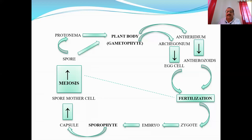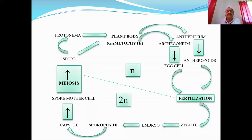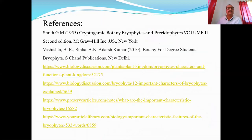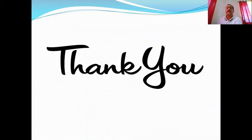When we join the two events — meiosis and fertilization — on one side we have the haploid generation and on the other the diploid generation. This phenomenon is called alternation of generations: the alternation of the gametophyte generation with the sporophyte generation. These are some of the references and books consulted. Thank you for your patient listening.